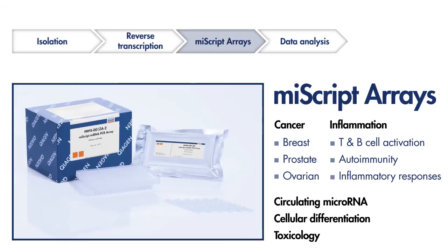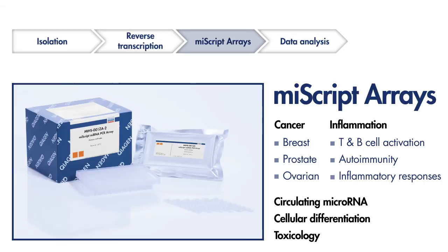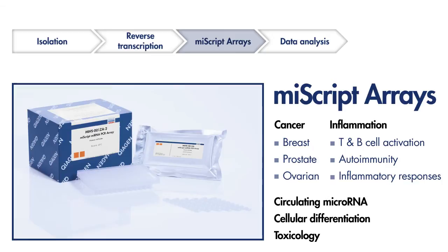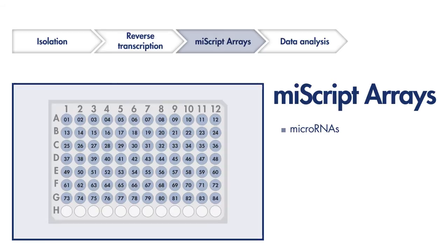Once the microRNA has been archived as cDNA, it is time for Step 3: profiling the microRNA using the miScript PCR array. Each miScript array is a ready-to-use, real-time PCR plate which includes laboratory-tested, microRNA-specific real-time PCR assays. Each miScript array has been organized into biologically relevant pathway or disease-focused panels.